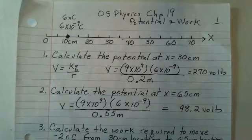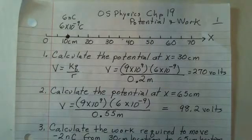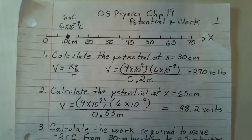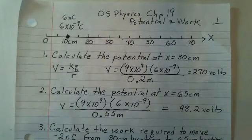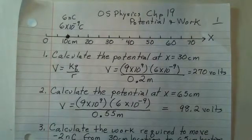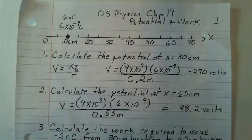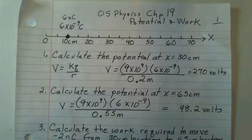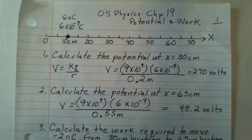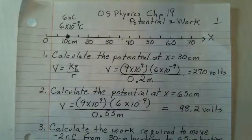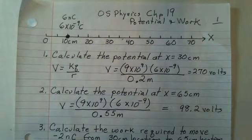So now, suppose we take minus 2 nanocoulombs at the 30 centimeter location and move it to the 65 centimeter location. Will work be required to do this process? The answer is yes. The negative 2 nanocoulomb charge is attracted to the plus 6 nanocoulomb charge. So to fight against that force of attraction and move the charge, we'll have to do some work.